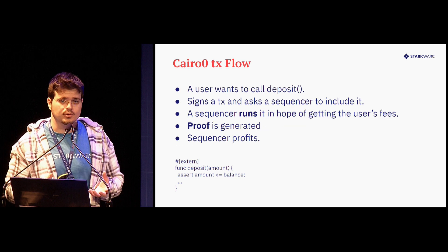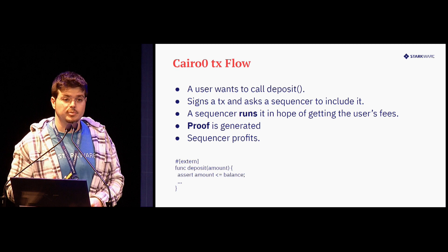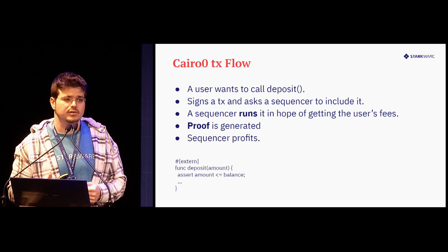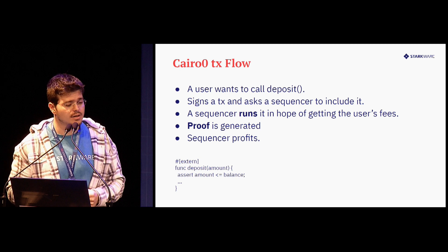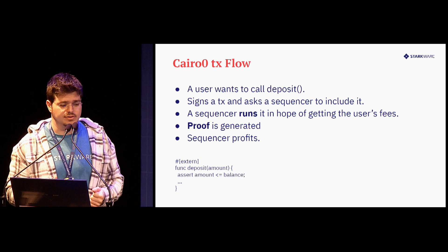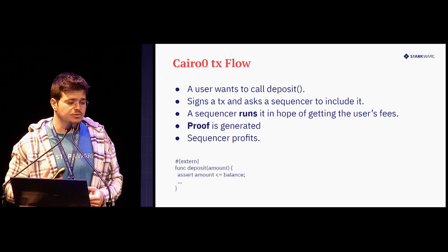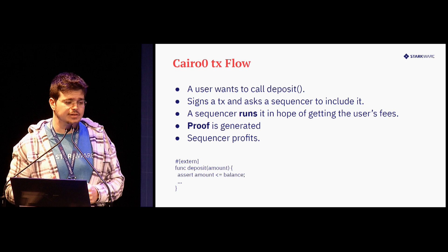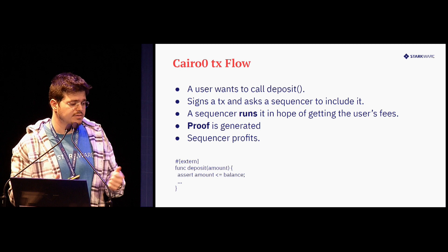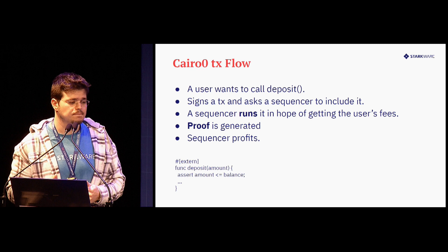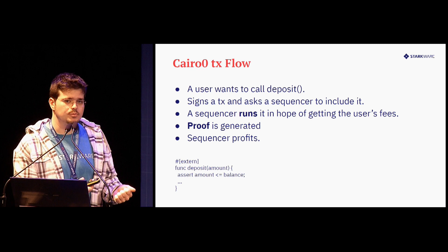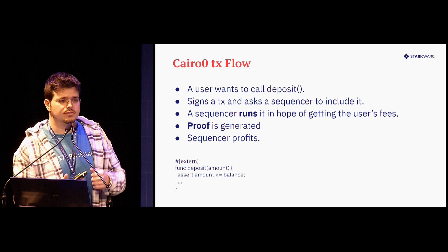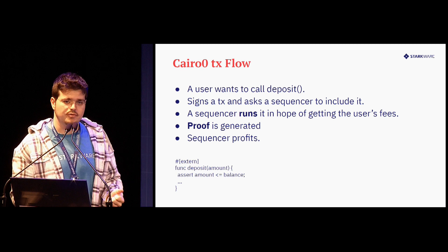After it is deployed, a user wants to call this function deposit. The user signs the transaction, which asks some sequencer on the StarkNet network to include this transaction in a block. The sequencer runs this transaction in hopes of getting the user's fees — the user is willing to give a certain fee for a sequencer to include it. After inclusion, a proof is generated of the entire block including this transaction, the block is included in StarkNet, and the sequencer profits some of this fee.